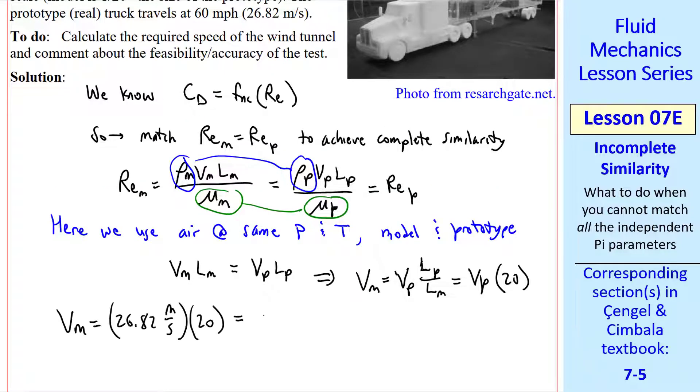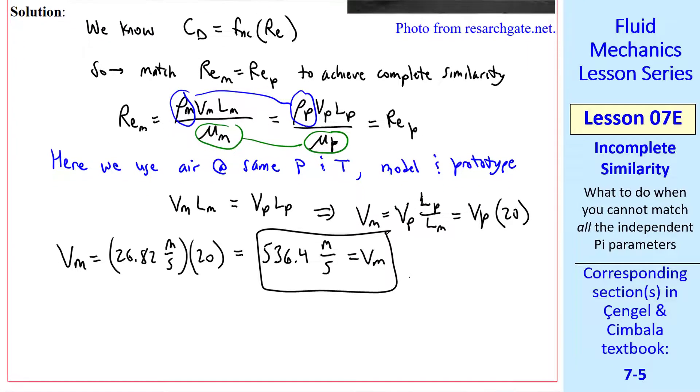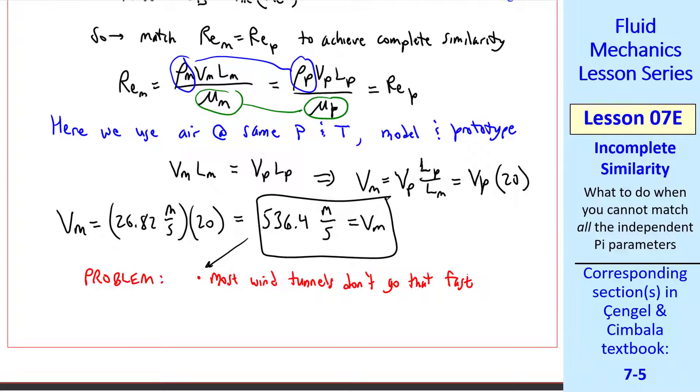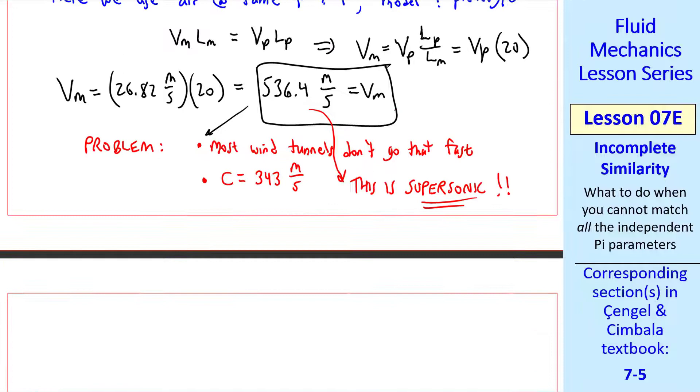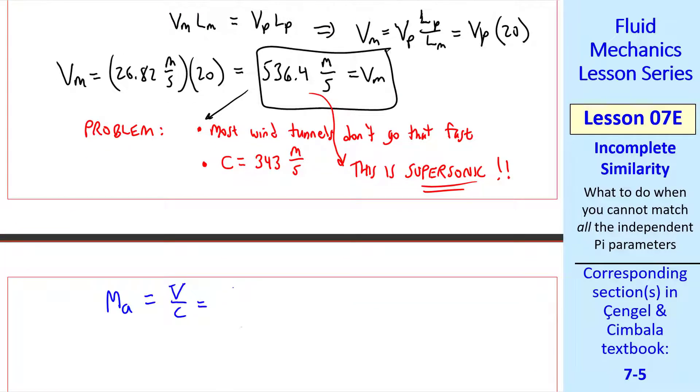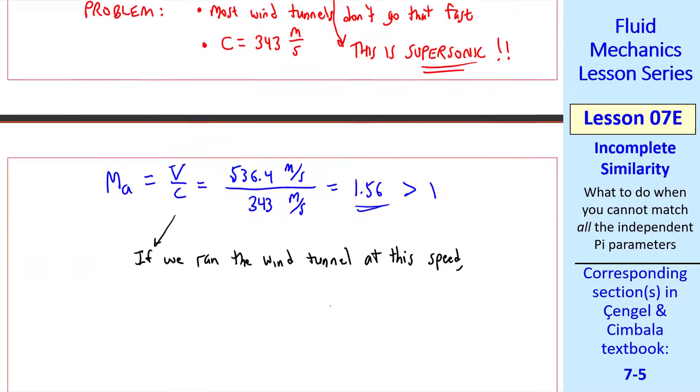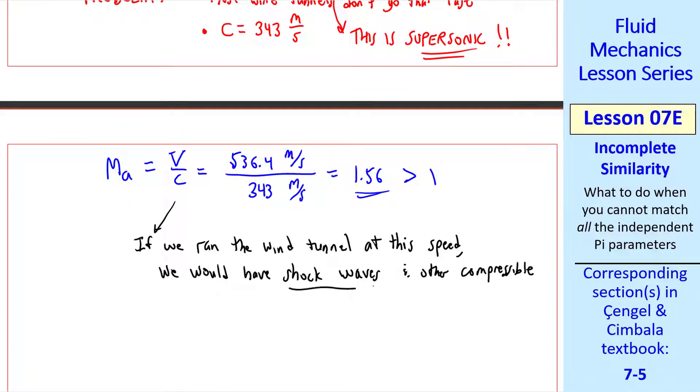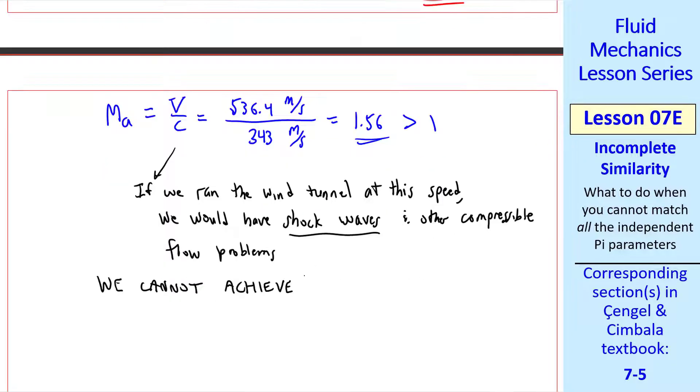Plugging in v_p, we get v_m equal 536.4 meters per second. Hopefully you see this is problematic. First, most wind tunnels don't go that fast. A bigger problem is that the speed of sound is 343 meters per second for air at standard temperature. So this speed is supersonic. In fact, we can calculate the Mach number. Mach number is v over c. When we plug in v and c, we get a Mach number of 1.56, which is greater than 1, which is supersonic. If we ran the wind tunnel at this speed, we would have shock waves and other compressible flow problems.